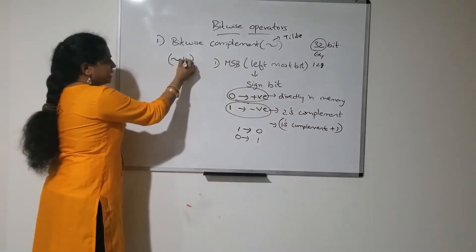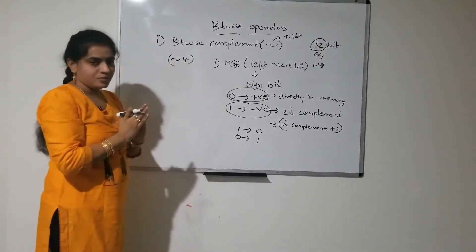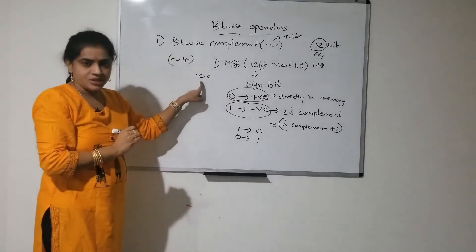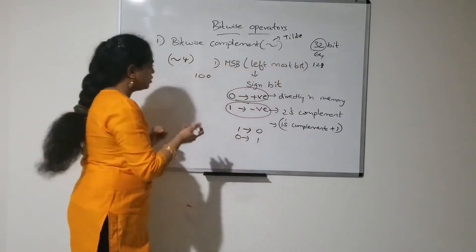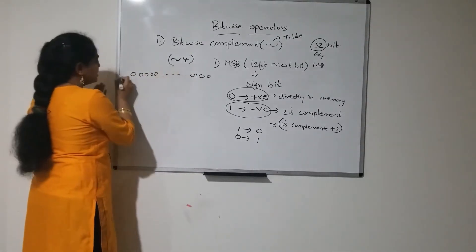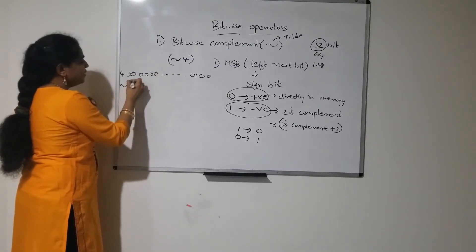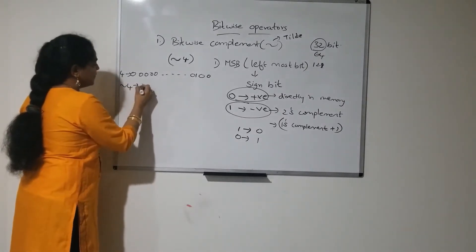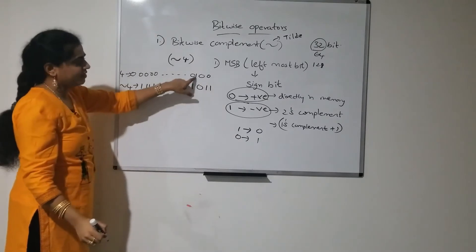I am going to explain with an example to give a clear idea of the complement operation. Complement of 4: 4 in binary is 1 0 0, but that is only 3 bits. I have to represent it in 32-bit format, so all the remaining bits are 0s. To perform complement of 4, for every 0 you represent 1 and for every 1 you represent 0. So the result becomes all 1s followed by 1 0 1 1.